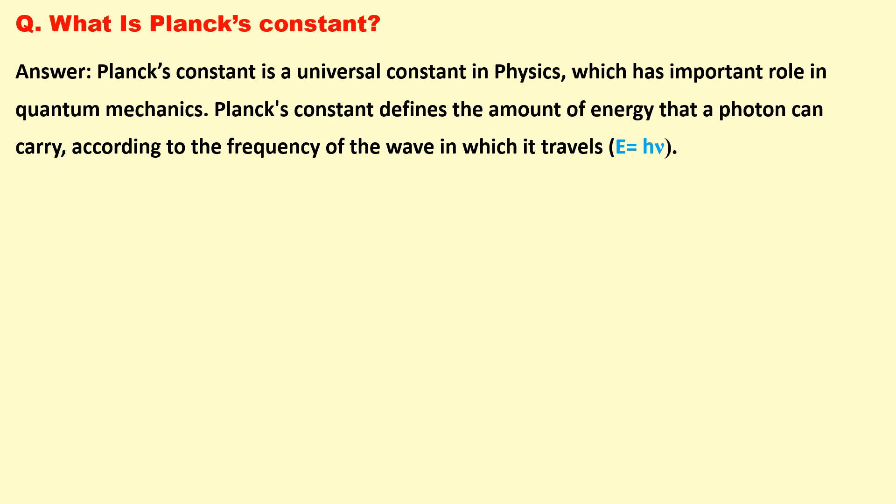What is Planck's constant? Planck's constant is a universal constant in physics which has important role in quantum mechanics. Planck's constant defines the amount of energy that a photon can carry according to the frequency of the wave in which it travels, E equals H nu.